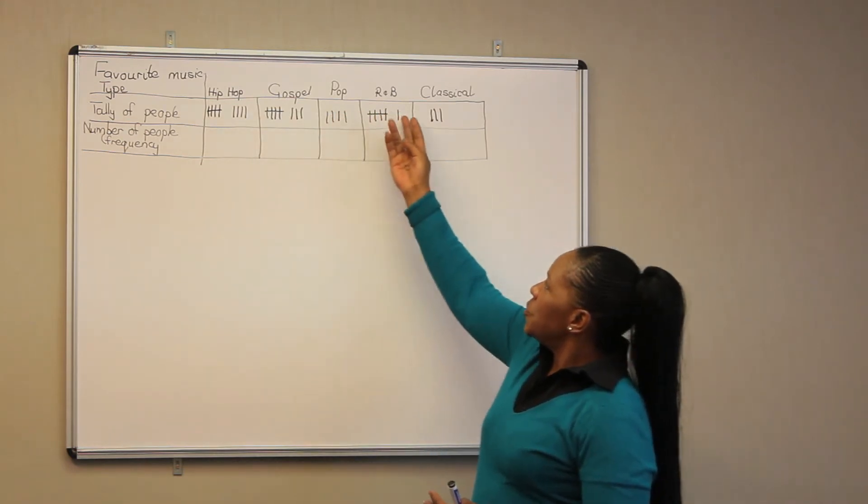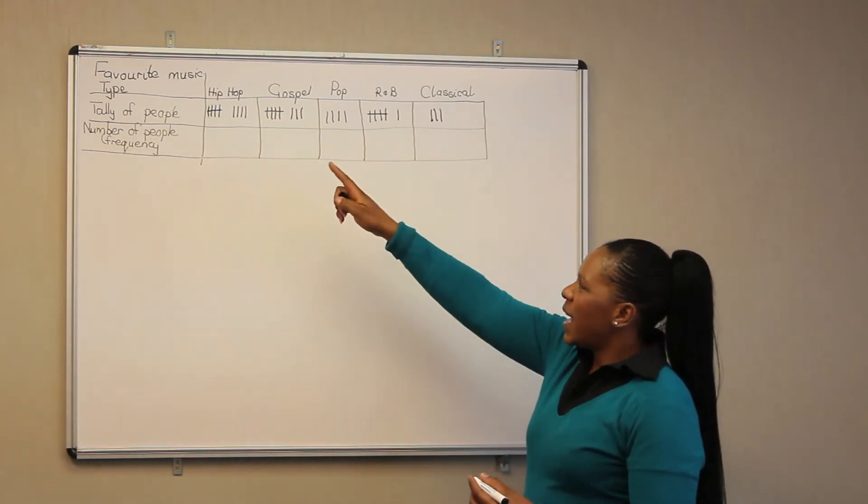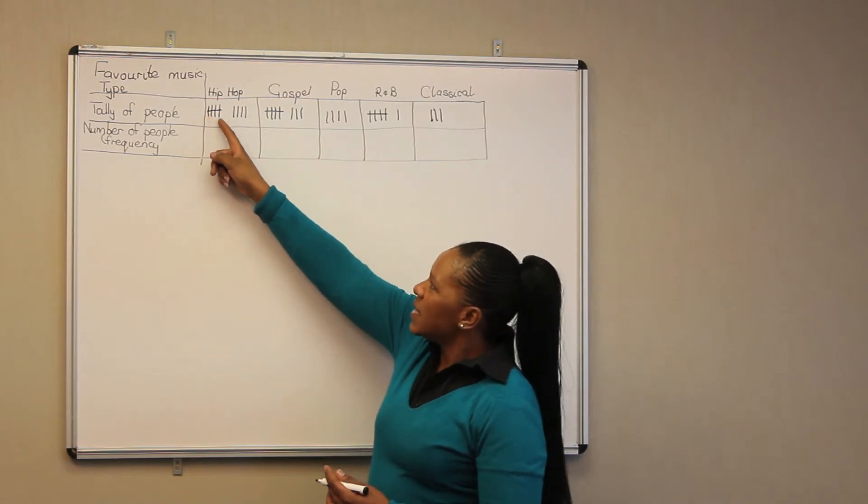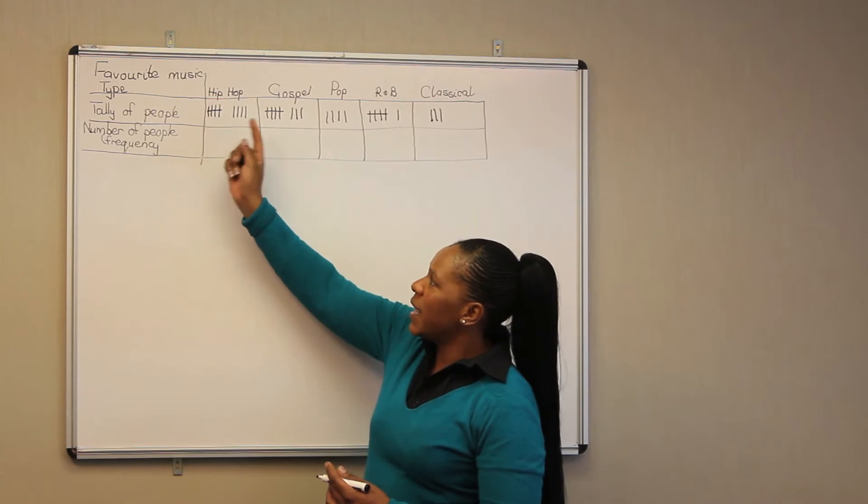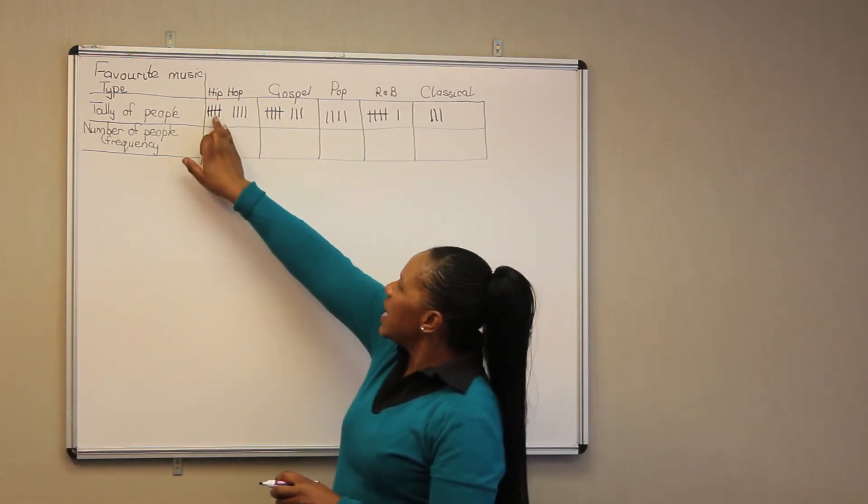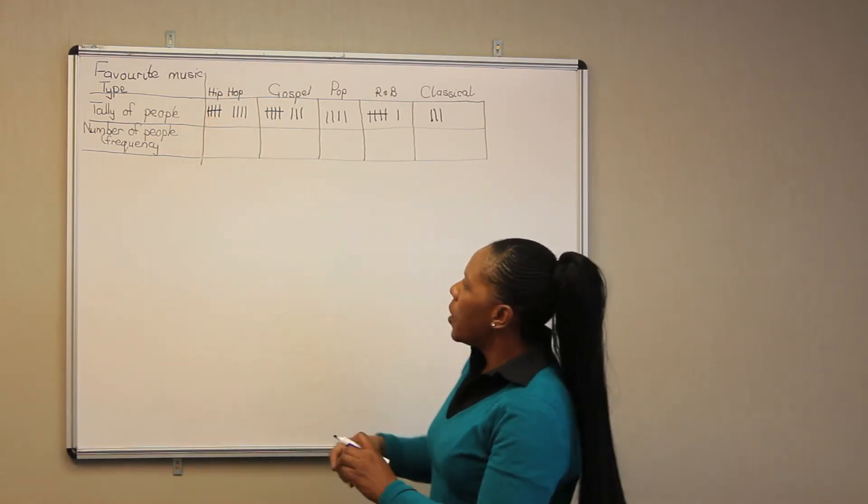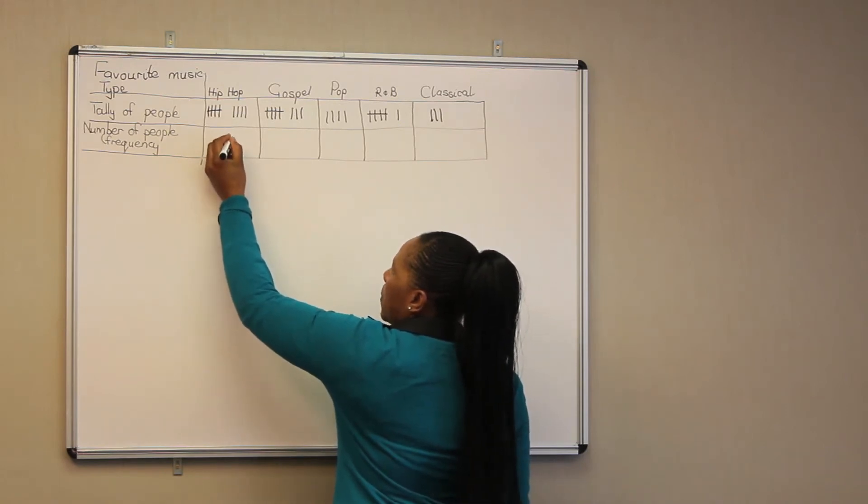These are the tallies that we drew for each type of music. On the tallies, each line represents one person. In this instance, the fifth line represents the fifth person and it cancels the four which are there. So it means here we have five people plus four people for hip-hop, which gives us a total of nine people who love hip-hop.